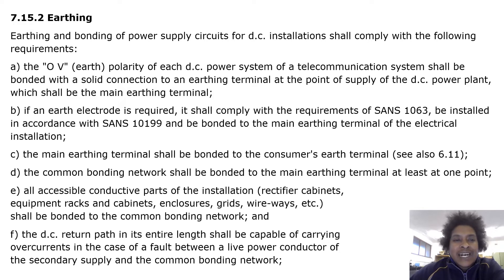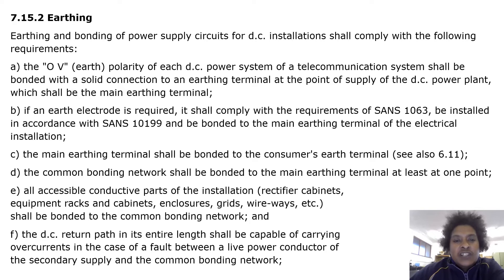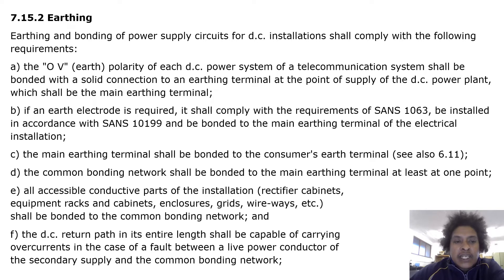Earthing and bonding of power supply circuits for DC installations shall comply with the following requirements. The zero voltage earth polarity of the DC power system of a telecommunication installation shall have a solid connection to the earthing terminal at the point of supply of the DC power plant, which shall be the main earthing terminal.